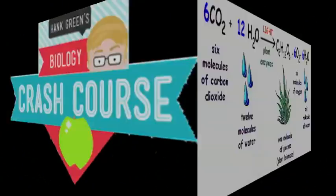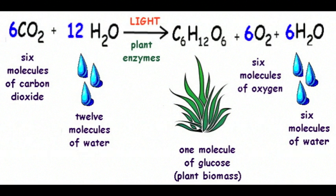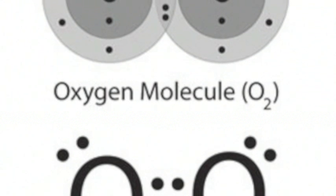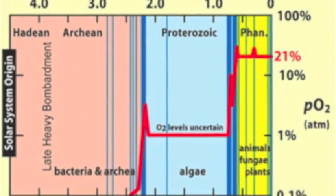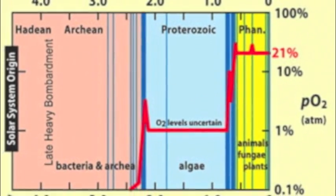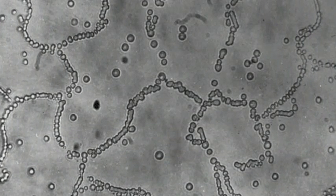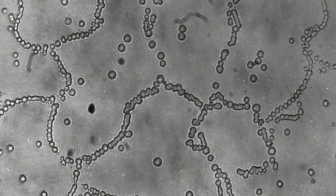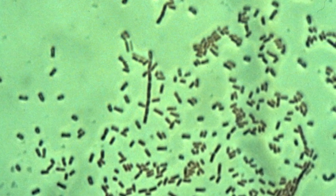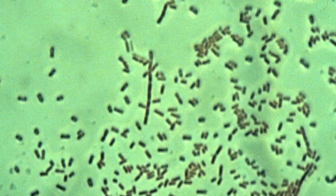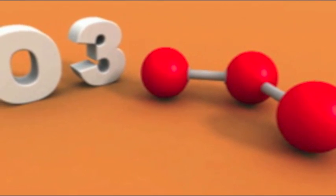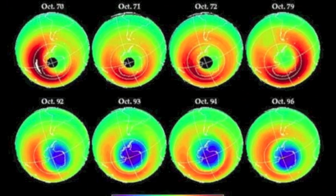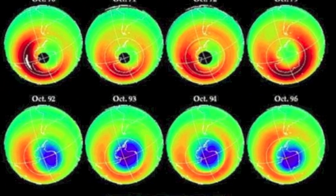Approximately 3 billion years ago, photosynthesis that uses water as a reducing agent evolved, producing oxygen in the process. The Earth's oxygen content slowly rises, acting as a poison to many bacteria. Microbes also had started to move onto land by this time. Approximately 2.5 billion years ago, oxygenic photosynthesis seriously altered the Earth's atmosphere.